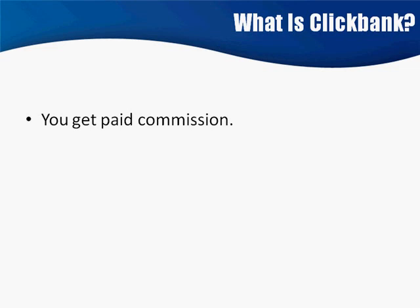You publish your product, and other people — affiliate marketers — come in, find the product, and want to promote it. Using tactics like Google AdWords, blogs, or email marketing, they try to get people to your page to purchase the product. When someone purchases through their link, they get paid a commission. That's what affiliate marketing is about: send traffic to an offer and get paid commission.